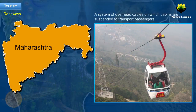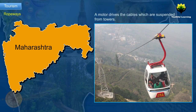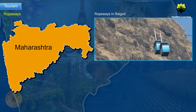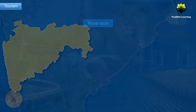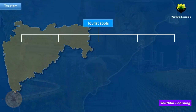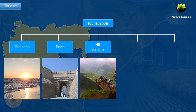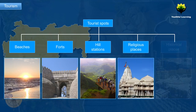Ropeways. A ropeway is a system of overhead cables on which cabins or carriers are suspended in order to transport passengers. A motor drives the cables, which are suspended from towers. Usually, ropeways are used to cross deep valleys and steep slopes. For example, ropeways in Raigad provide passenger transportation to Raigad Fort. Various types of tourist spots in Maharashtra are beaches, forts, hill stations, religious places and historical places.